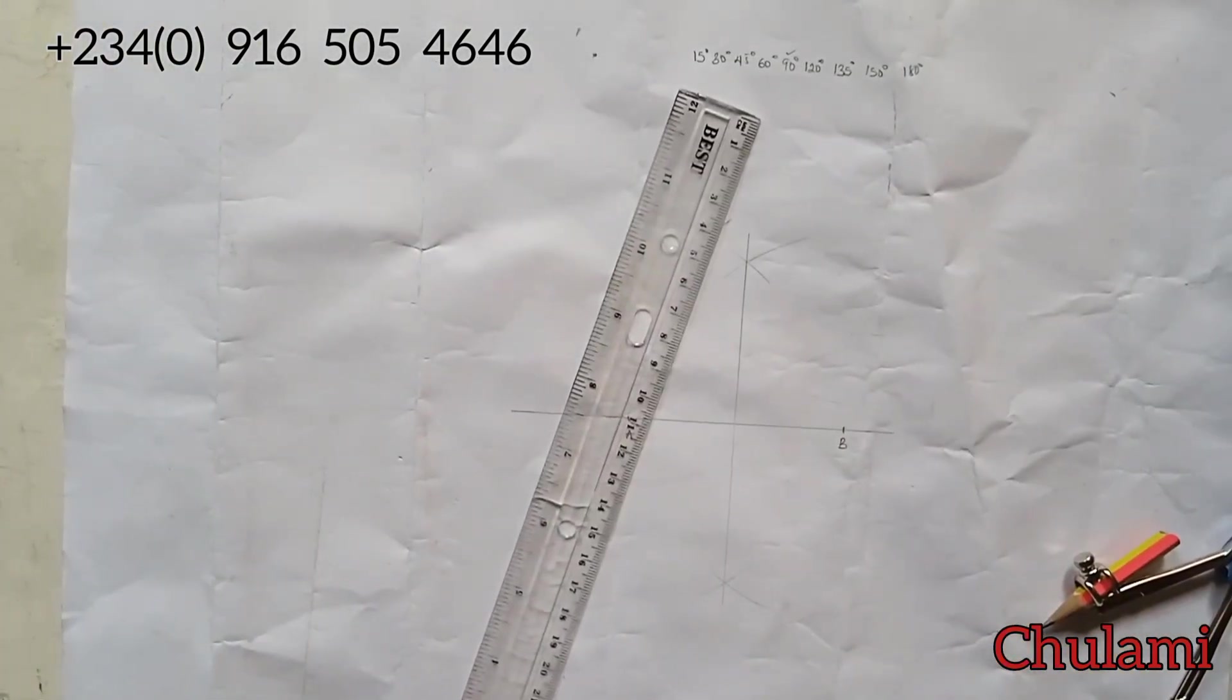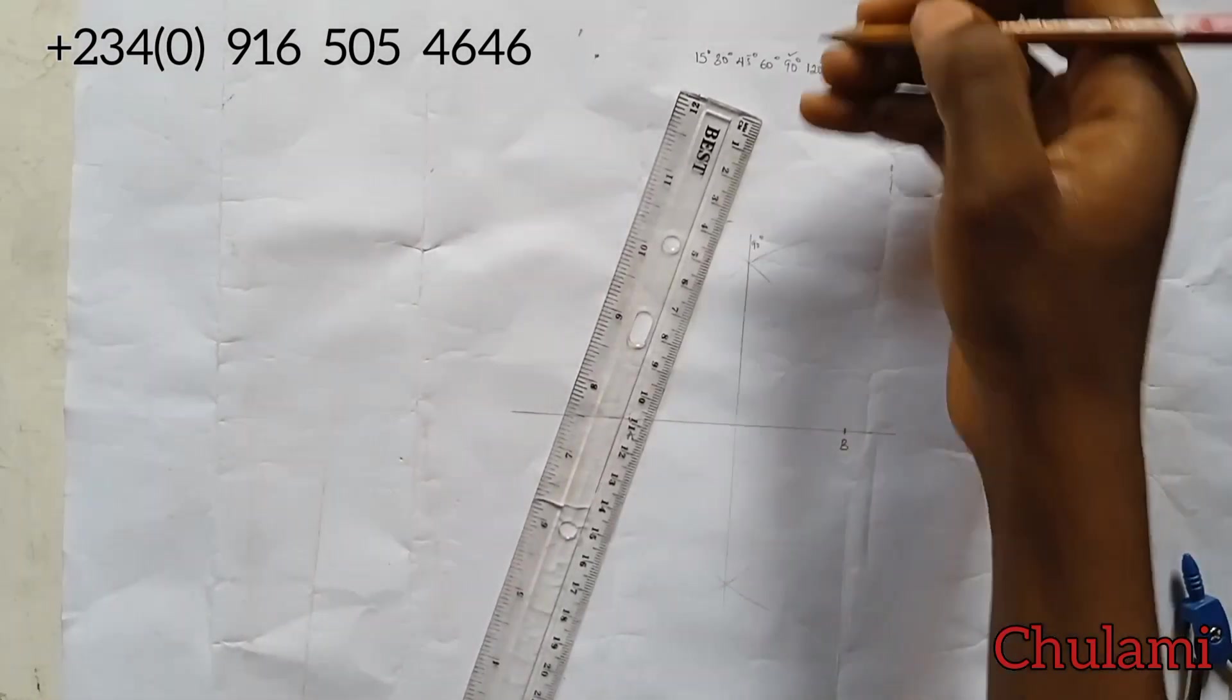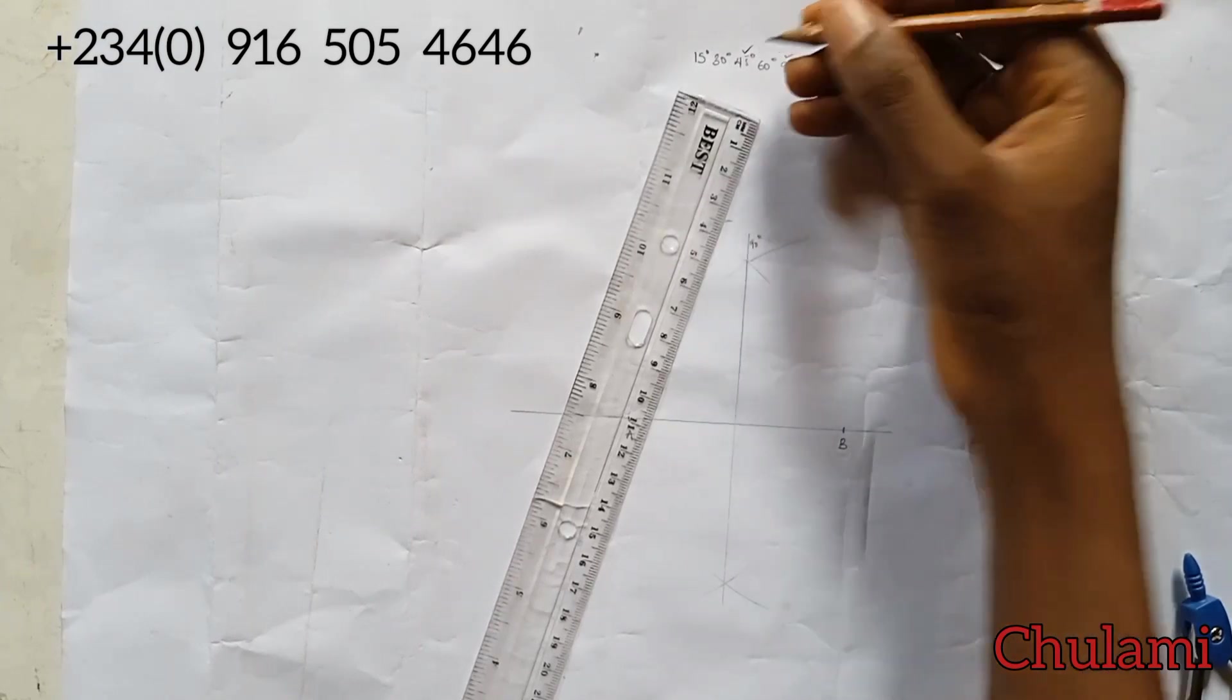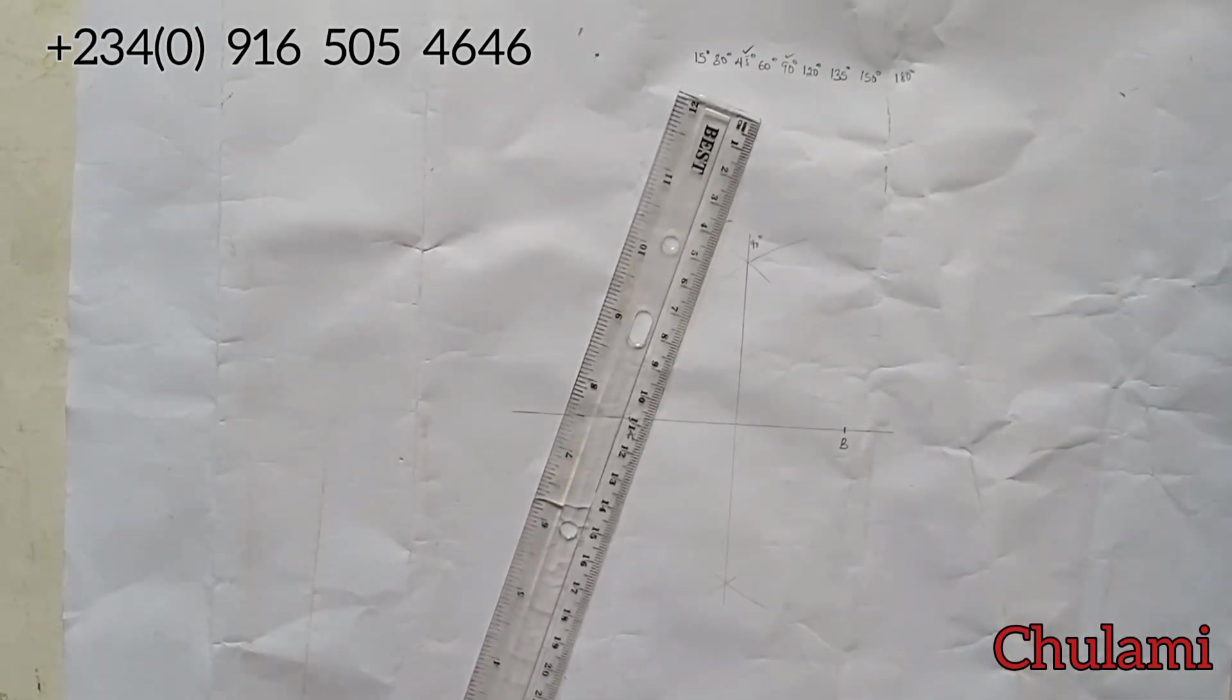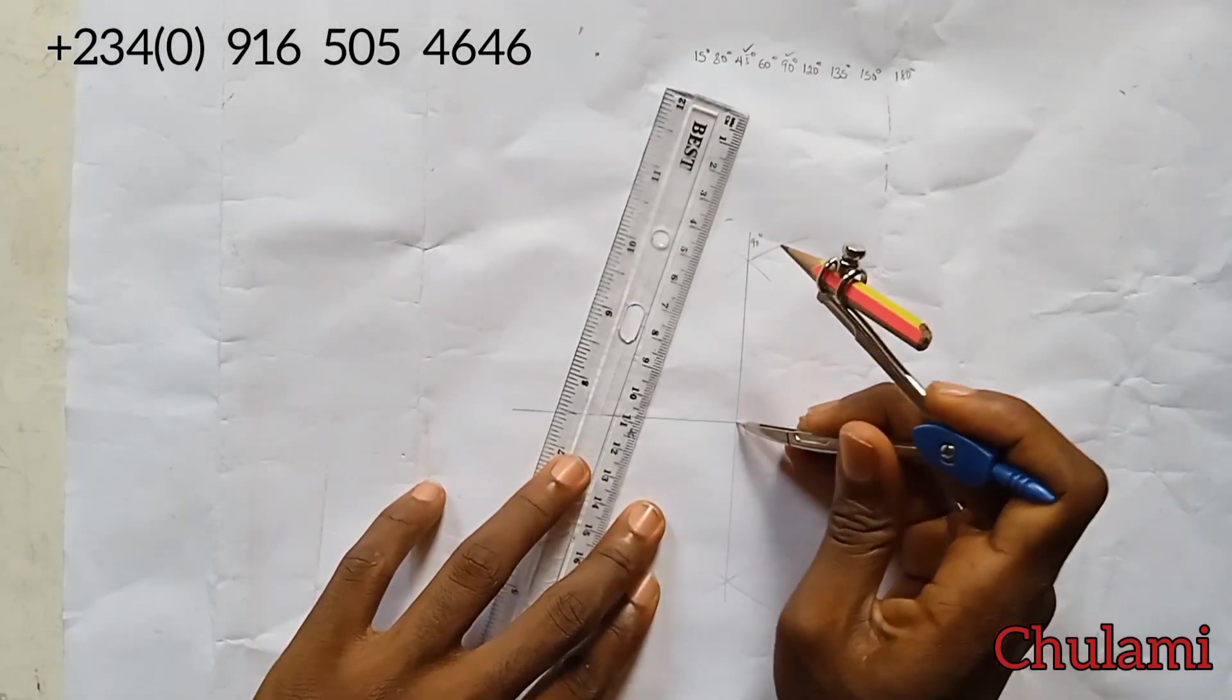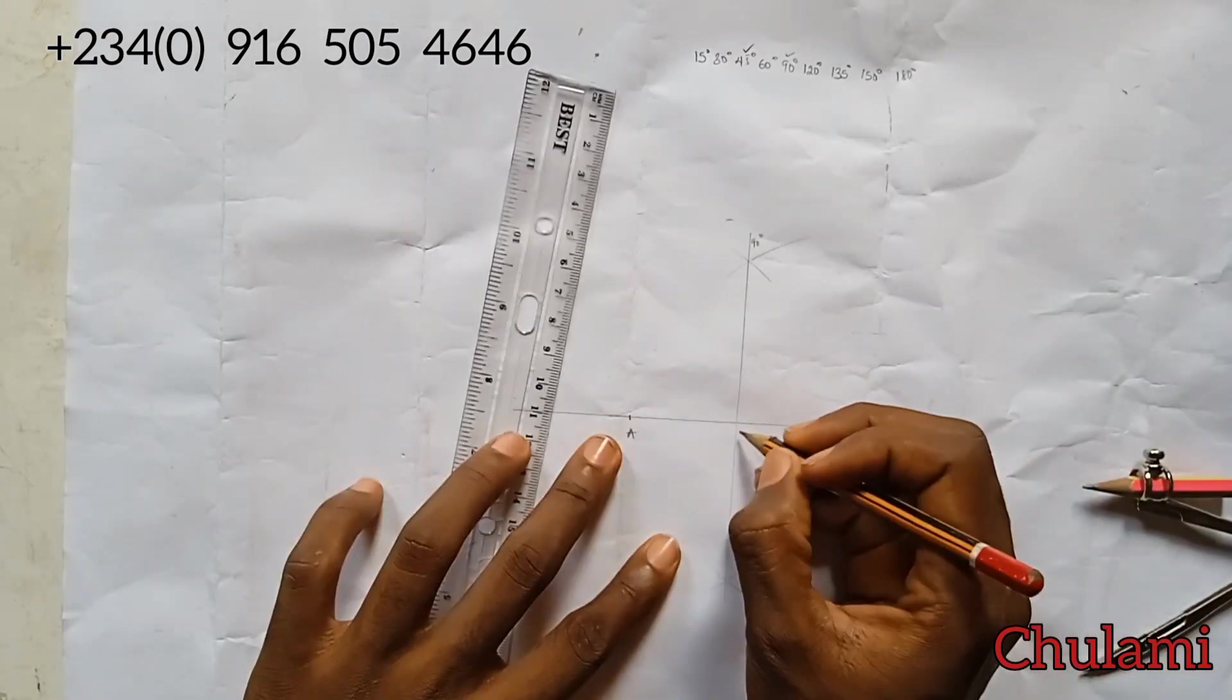So having done this, I will then join these two points. This will be our 90 degrees. So let's go ahead and construct 45 because it's more easier to construct 45 from 90.